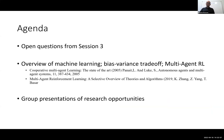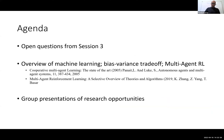We'll begin by wrapping up a few open questions from session three, then talk about some core ideas for today. We'll do a quick overview of machine learning, revisit the bias-variance trade-off, and jump into multi-agent reinforcement learning — in particular, two papers assigned for discussion today. They're set almost 15 years apart: one from 2005 and one from 2019, giving you a sense of progress in the field.